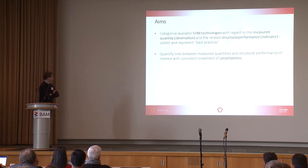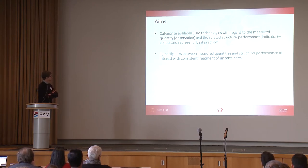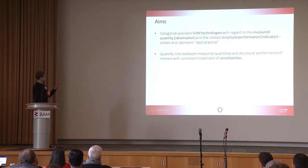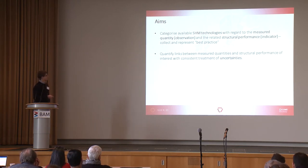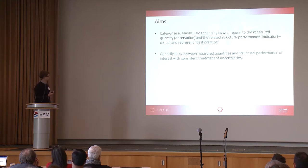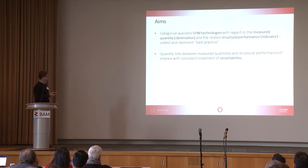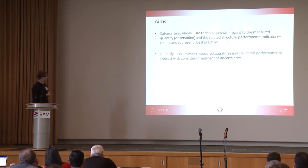We had two aims. When this proposal was written, looking at the large amount of variability of structural health monitoring technologies, there was a clear need to categorize those — looking at what type of observations and information they provide and relating this to structural performance and identifying best practices. That was the first aim. The second aim: when discussing information provided by structural health monitoring, you can only quantify the information content when you identify and treat all uncertainties in a consistent way. So quantifying the links between measured quantities and structural performance, and treating consistently all uncertainties therein, was the second aim.